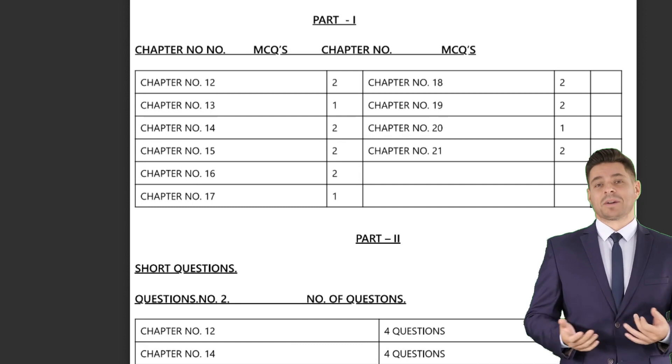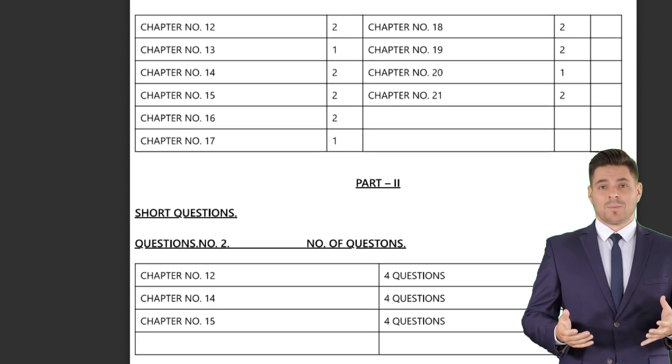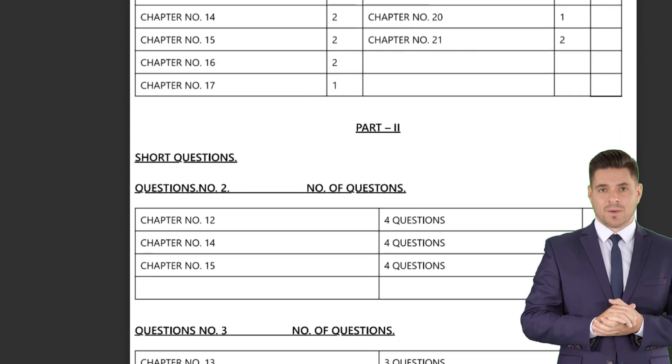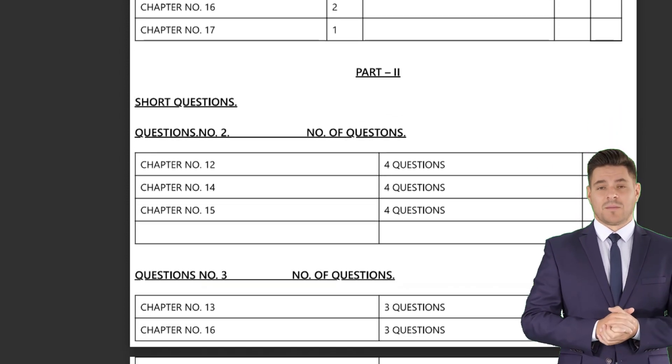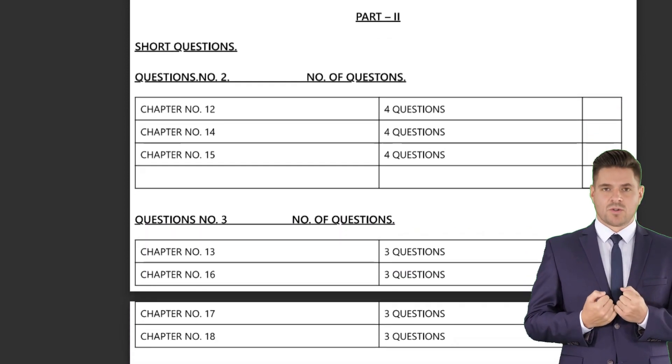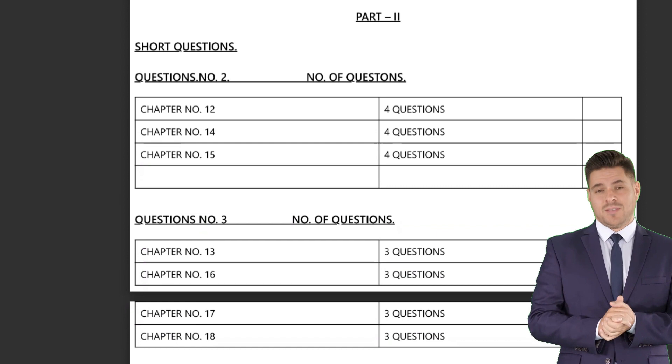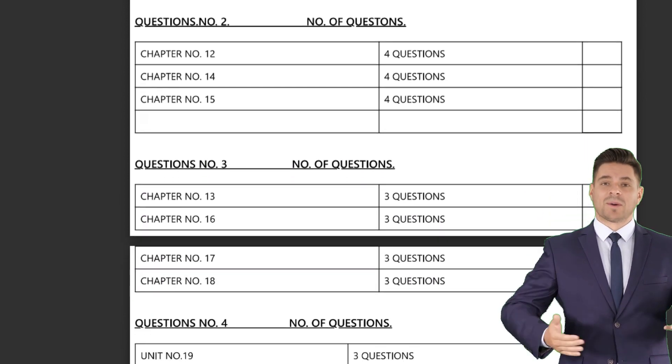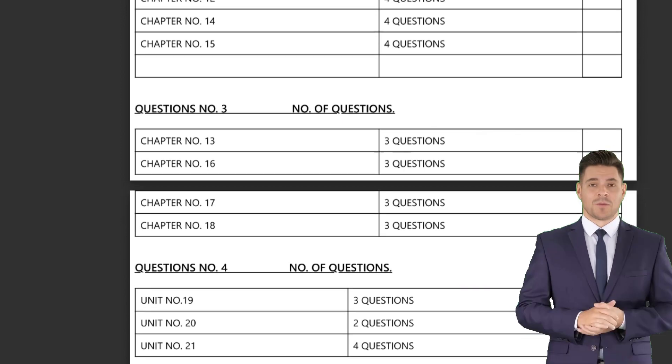As students will take exams at the earliest possible date, it would be prudent for them to familiarize themselves with the physics paper pairing scheme for 12th class in 2023. Pairing schemes are useful to students since they allow them to identify topics from which the majority of questions will be drawn. Instead of focusing on the whole course, this paper scheme encourages students to pay attention to particular topics.